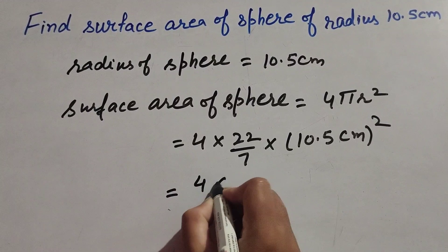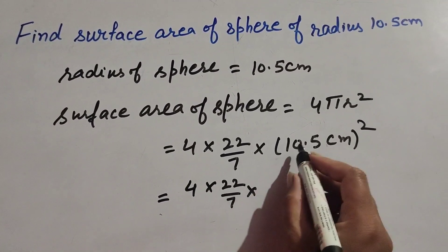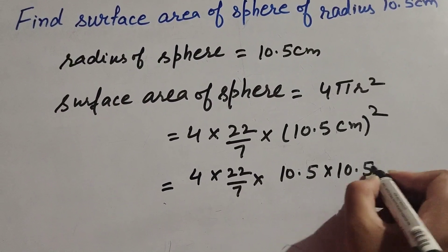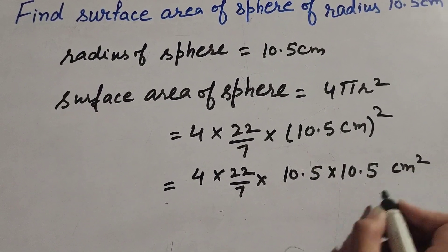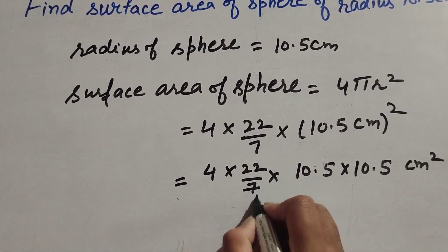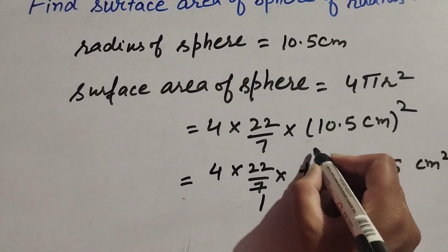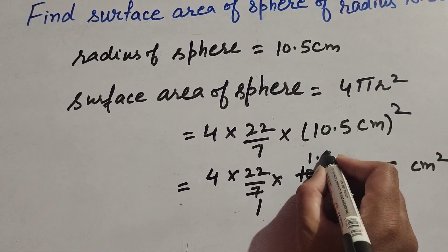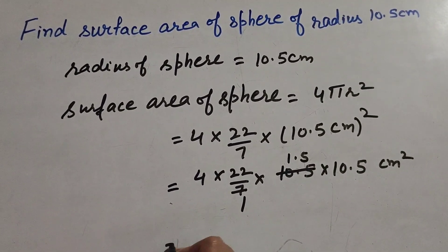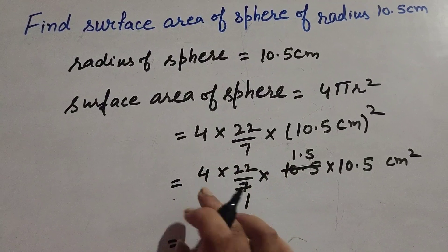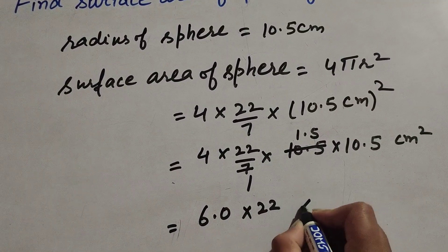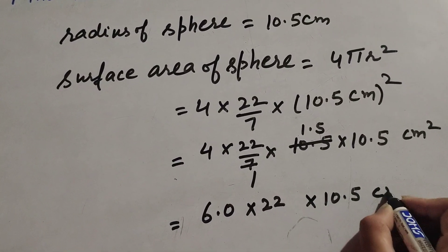So it is equal to 4 × 22/7 × 10.5 × 10.5 cm². Since 10.5 is divisible by 7 — 7 × 1.5 = 10.5 — we cancel them. Then 4 × 1.5 gives 6.0, so we have 6 × 22 × 10.5 cm².